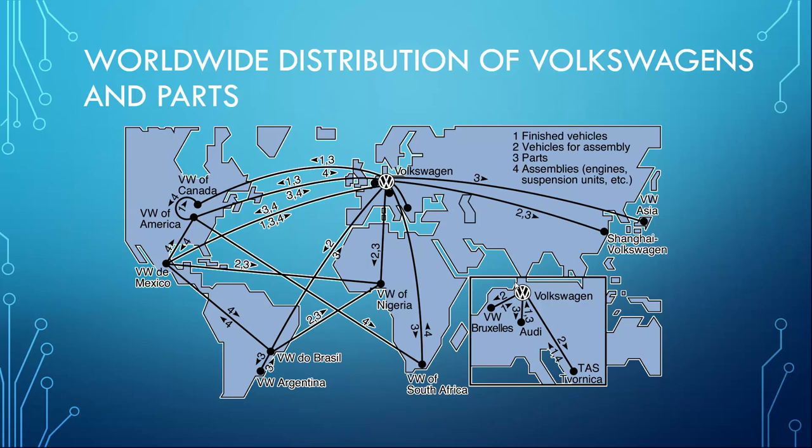This map shows the worldwide distribution of Volkswagens, the cars and parts. Each location was selected using an advanced programming model to ensure the efficiency and effectiveness of the distribution process.